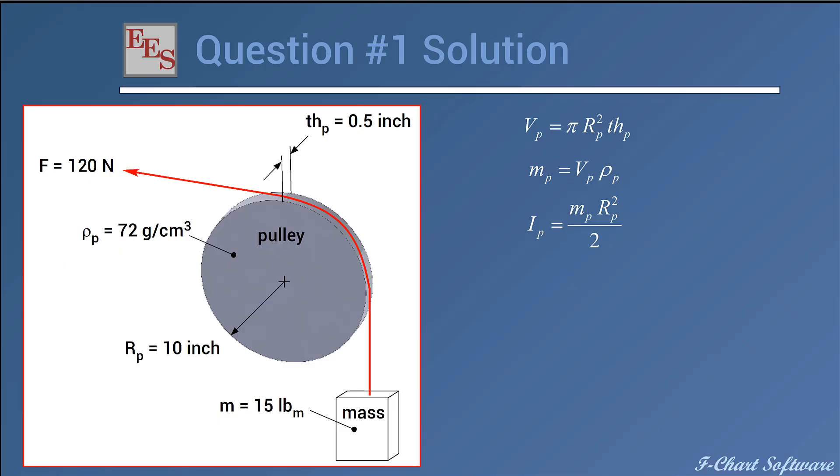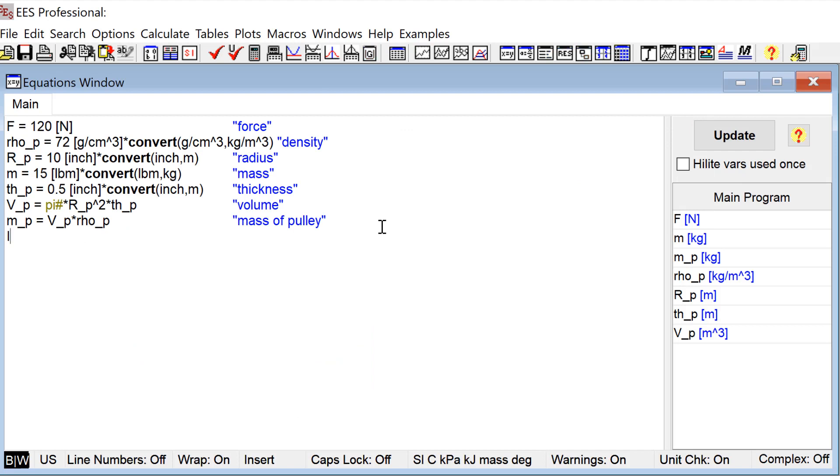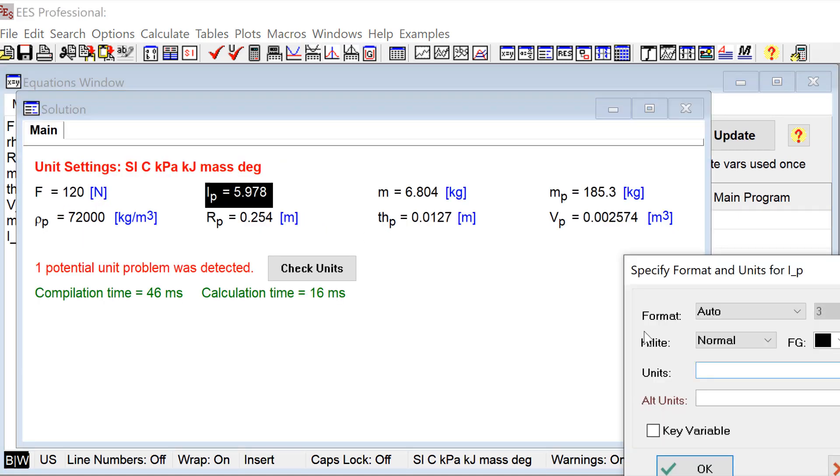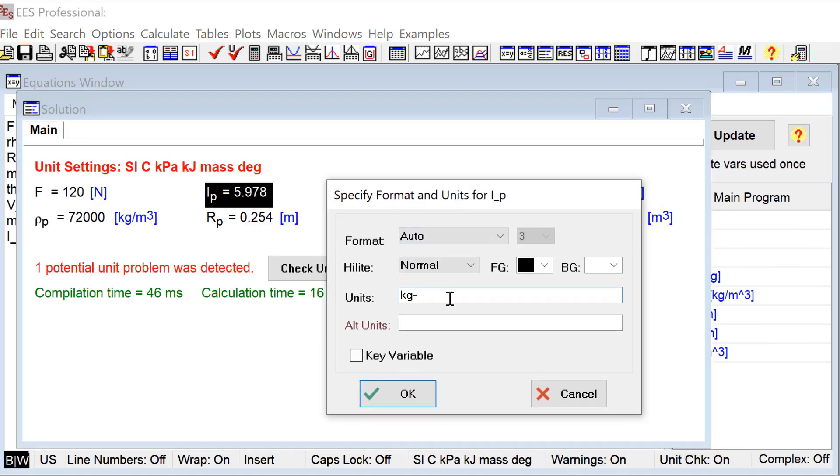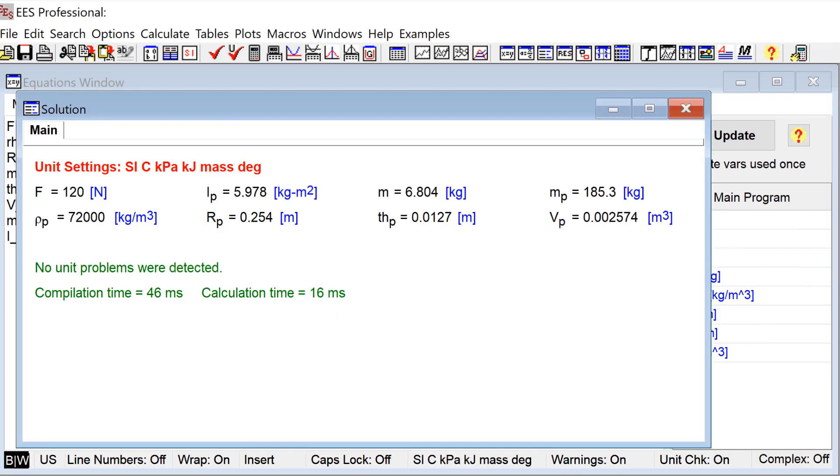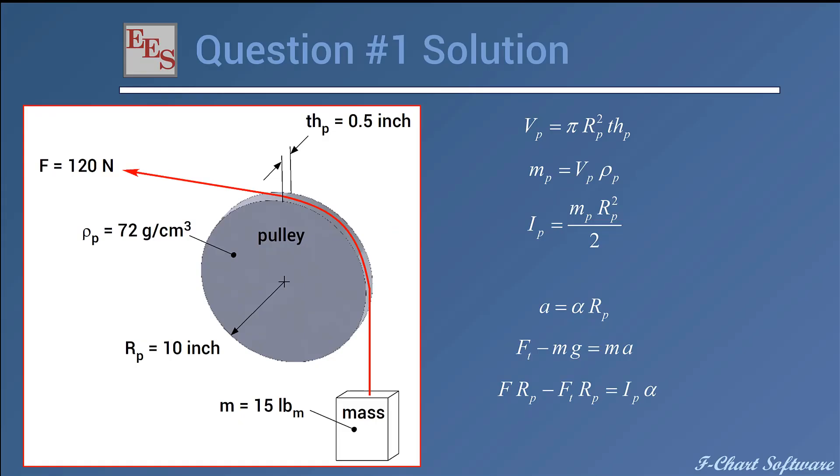These unit checks I'm doing are really checking the unit consistency of my solution. Finally, I have the moment of inertia of the pulley around the centerline, which is the mass times the radius squared divided by 2. I'll enter that one in as well—again, one equation, one unknown. I can solve that and make sure the units of moment of inertia are kilograms meters squared.